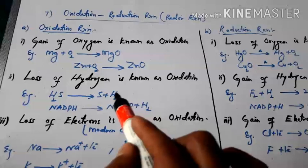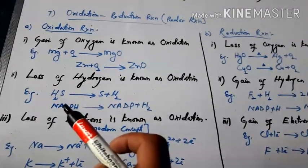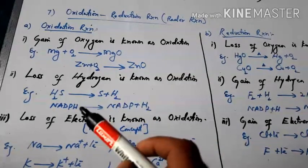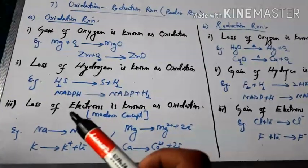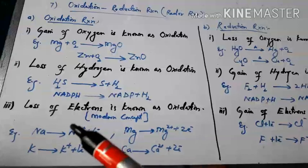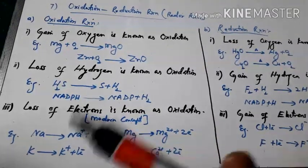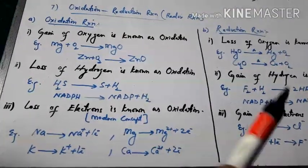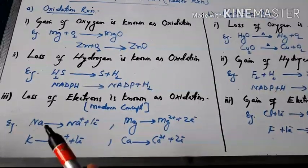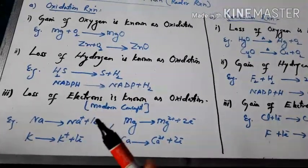If a substance loses hydrogen, it is also considered oxidation. For example, hydrogen sulfide (H₂S) gives sulfur plus hydrogen gas — hydrogen sulfide is oxidized because hydrogen is removed from it. Similarly, NADPH (reduced nicotinamide adenine dinucleotide phosphate) loses hydrogen, so NADPH is also oxidized. The third definition (modern concept) is that loss of electrons is known as oxidation — if a substance loses or gives away electrons, it is called oxidation. For example, sodium gives Na⁺ ion and an electron — sodium is oxidized. Magnesium gives 2 electrons — magnesium is oxidized. Similarly, potassium and calcium are also oxidized.